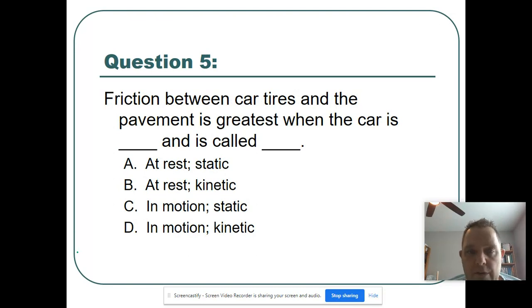Oh, I love this question. Friction between car tires and the pavement is greatest when the car is blank and is called blank. Well, I think that the easier part is to know that it is static. We went back and we looked at those definitions and we got it. Now, really, what does static mean? Does it mean it's at rest or is it in motion? And yep, you've got it. Static means it's at rest. So our best answer here is when the car is at rest and it's called static. It is not moving.